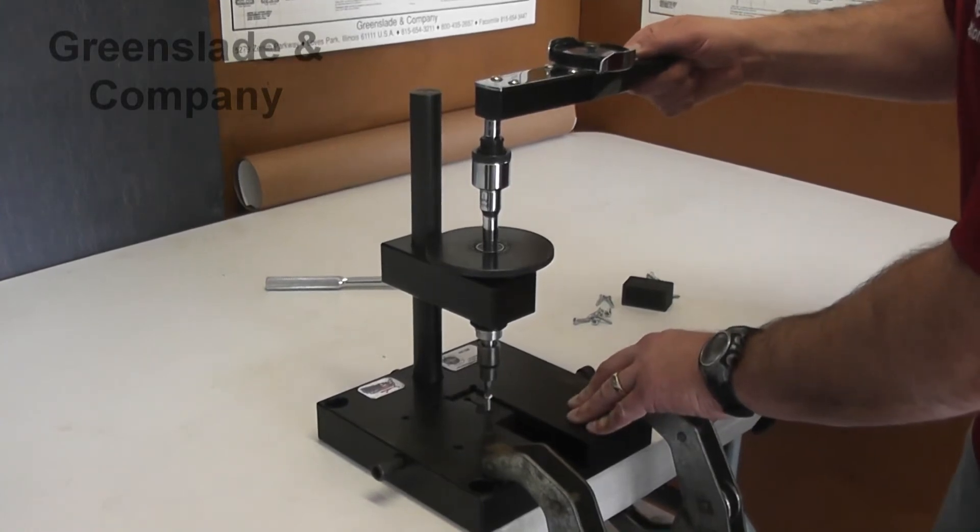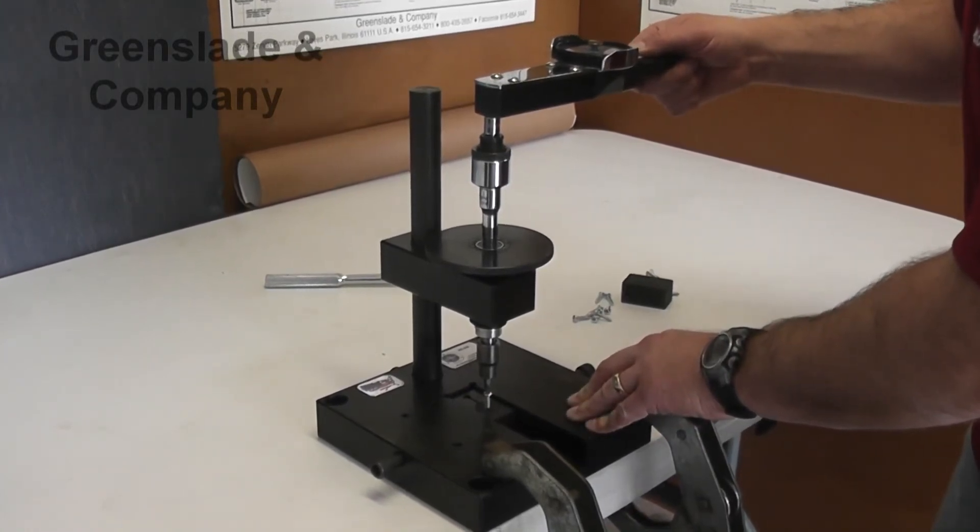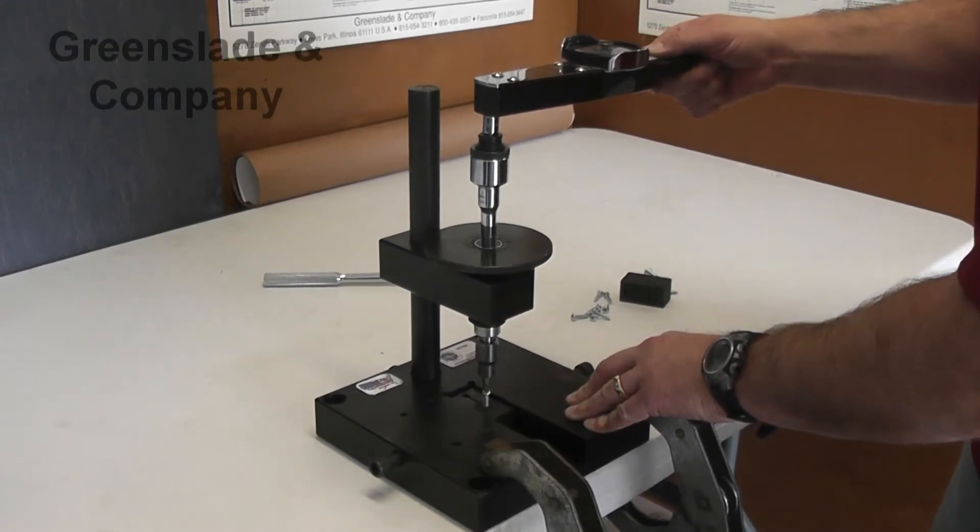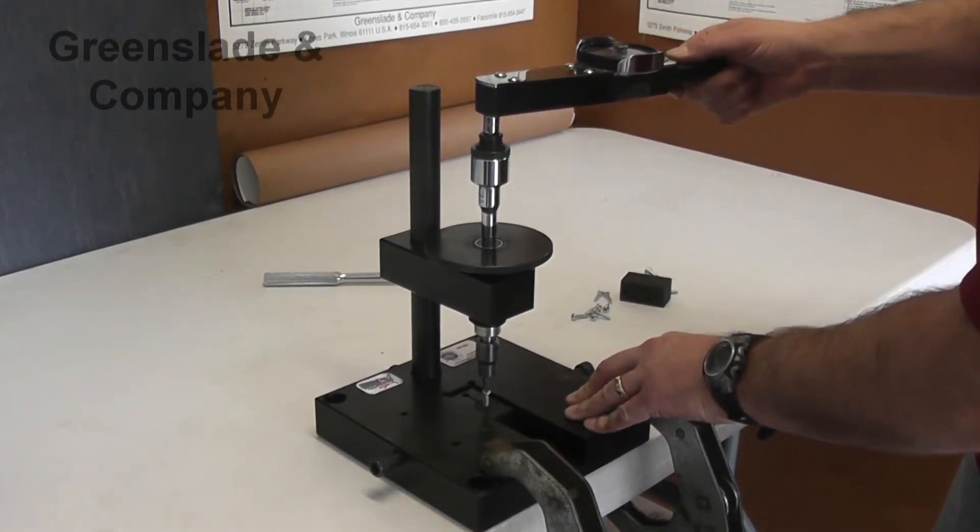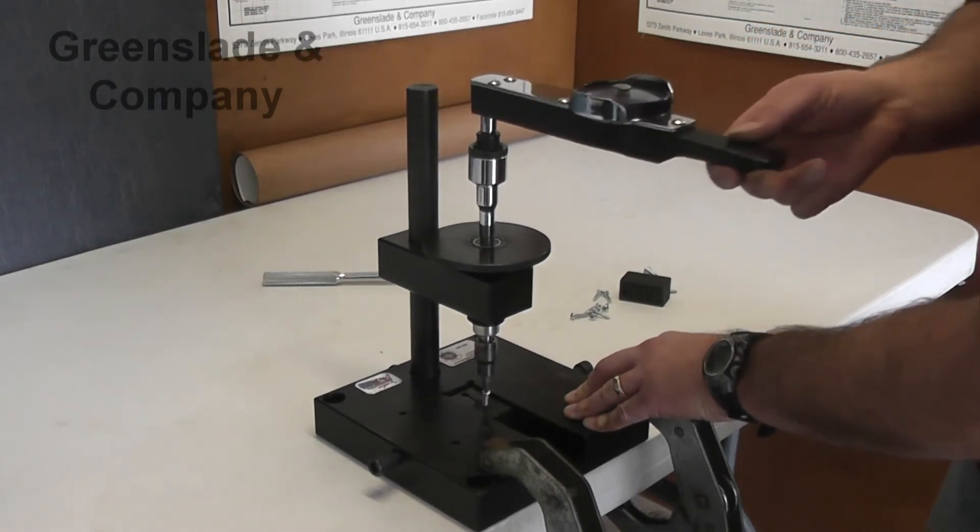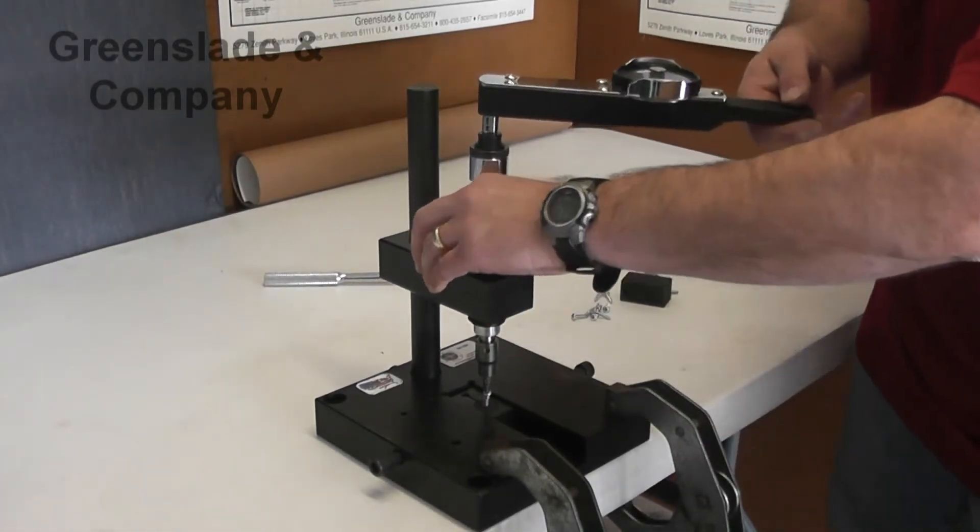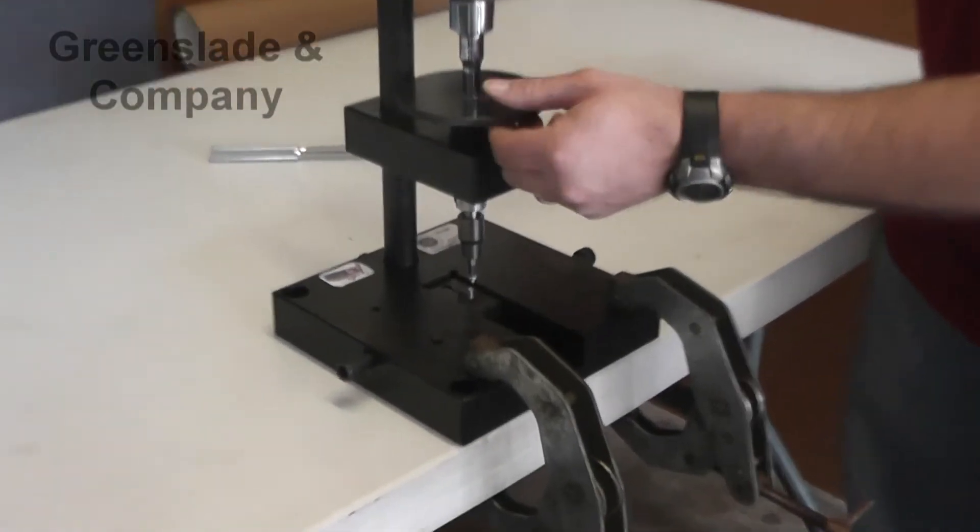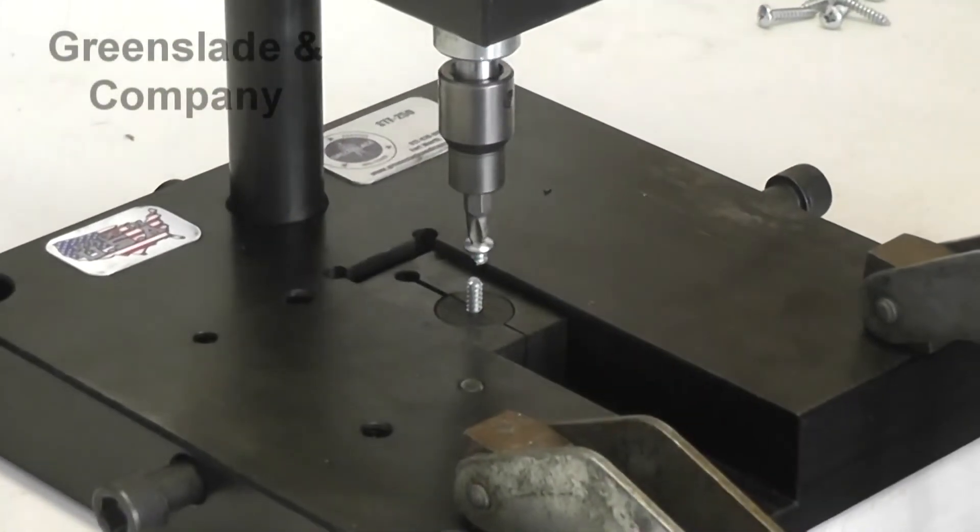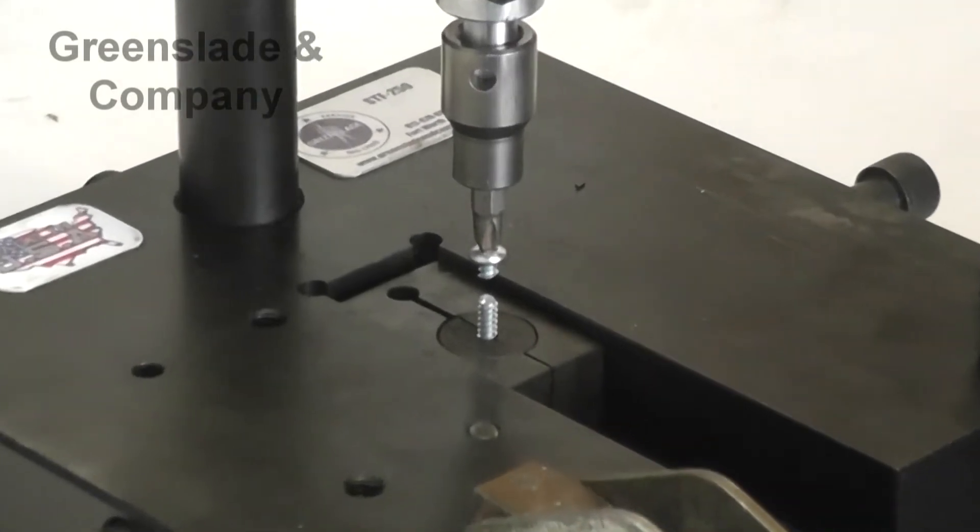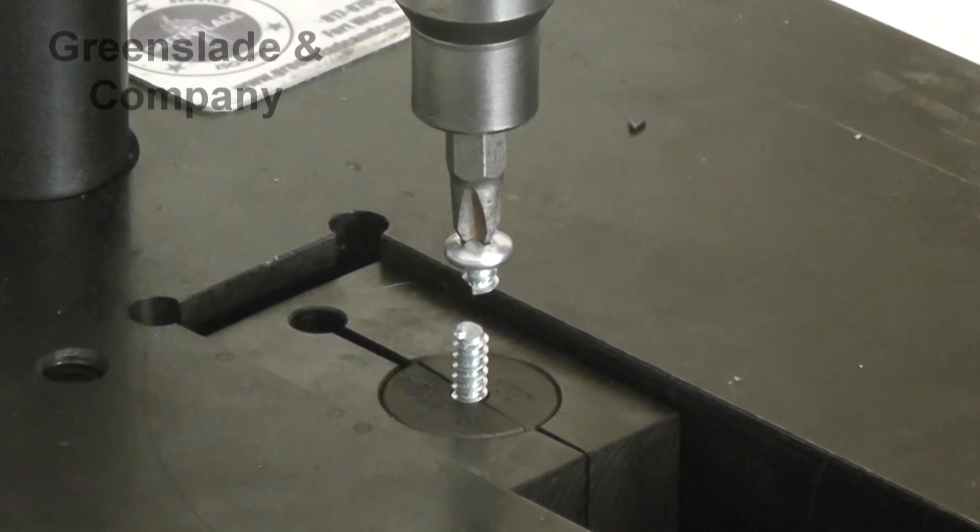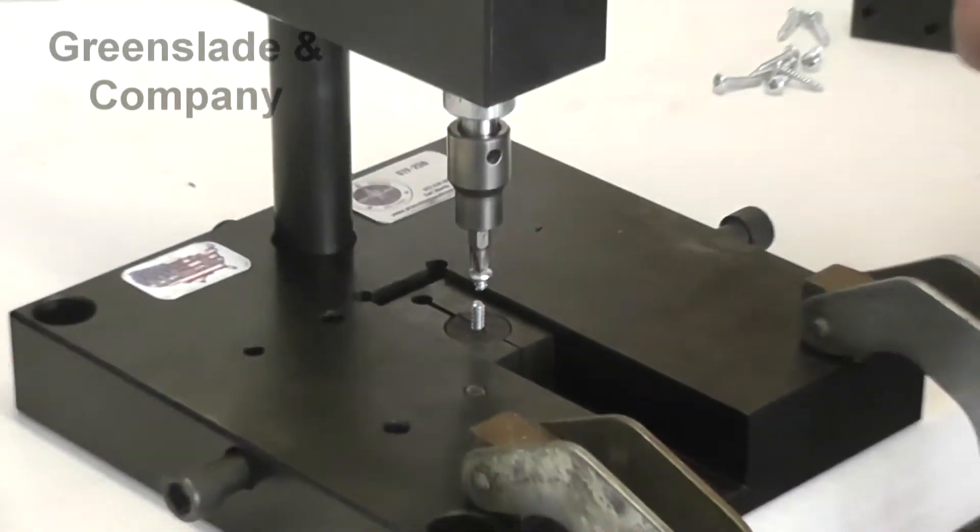So we torque. Our minimum we said was 39. There we are at 39, now 40, approaching 45, 46, 47. And there you see we have snapped the head off at 47, so our screws do meet the minimum. We could have either stopped at 39 and said they were good, or kept going until breakage like we did.